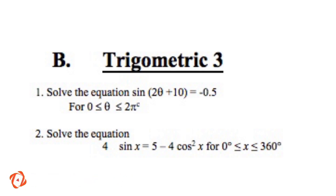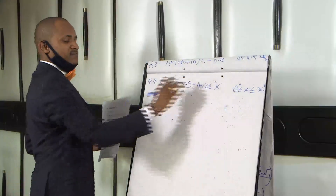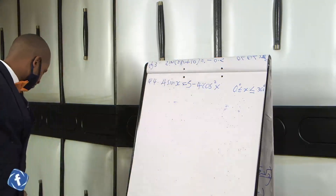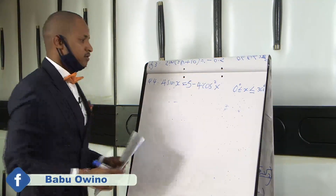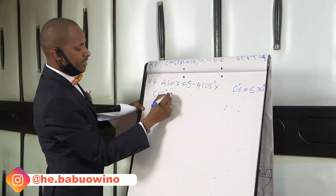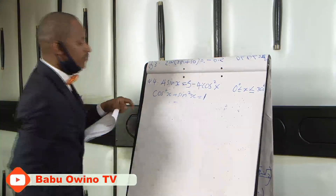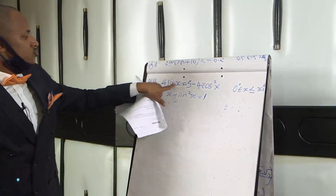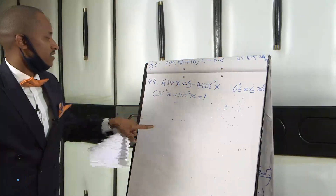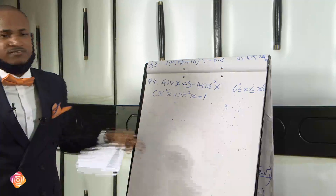When you meet such a question, first of all, you smile — because it's an easy solve. The first thing you do is use trigonometric identities, found in your four-figure mathematical tables. The identity we are going to use here is cos²x + sin²x = 1. We introduce it because we have two different unknowns — cosine and sine — so we want to make them uniform by replacing cos²x with a value in terms of sin x.